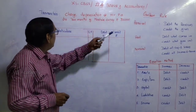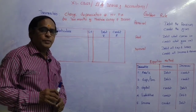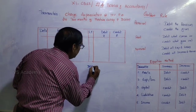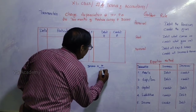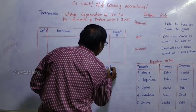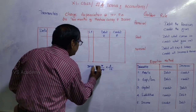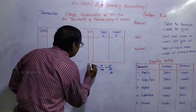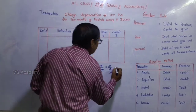Charge depreciation at 10% per annum for 2 months on a machine costing ₹30,000. The calculation: 30,000 × 10/100 × 2/12 = ₹500. So ₹500 is the depreciation.